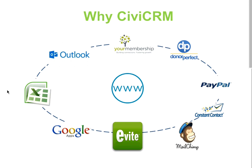Most of the time, nonprofits starting with CiviCRM have data living in different databases. For example, at the core of your data system you have your website, but your contacts are spread across different databases. It can be Excel spreadsheets with contacts, email addresses, and phone numbers. Then you have data in Outlook — each staff member has their own Outlook address book. Or if your organization uses Google Apps, you have contacts and information living there as well.